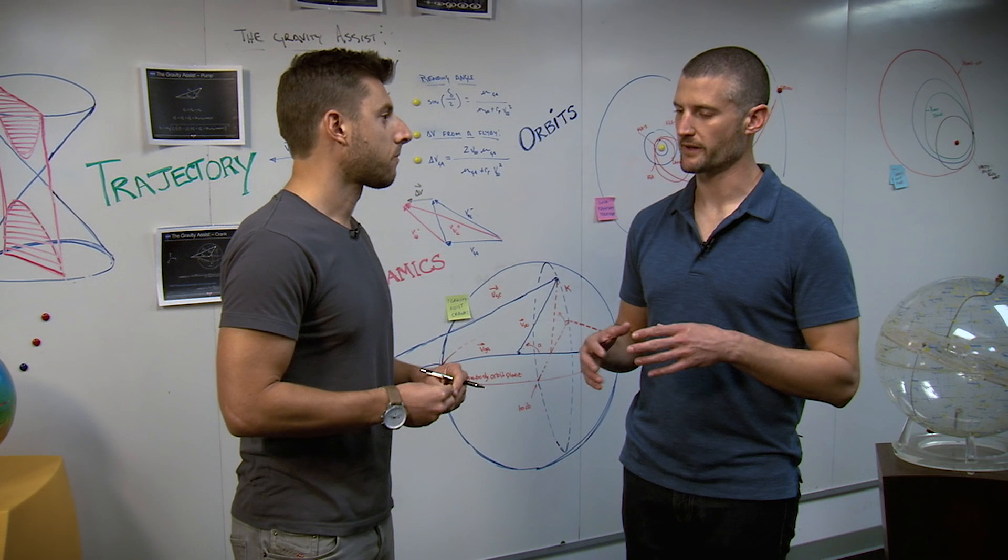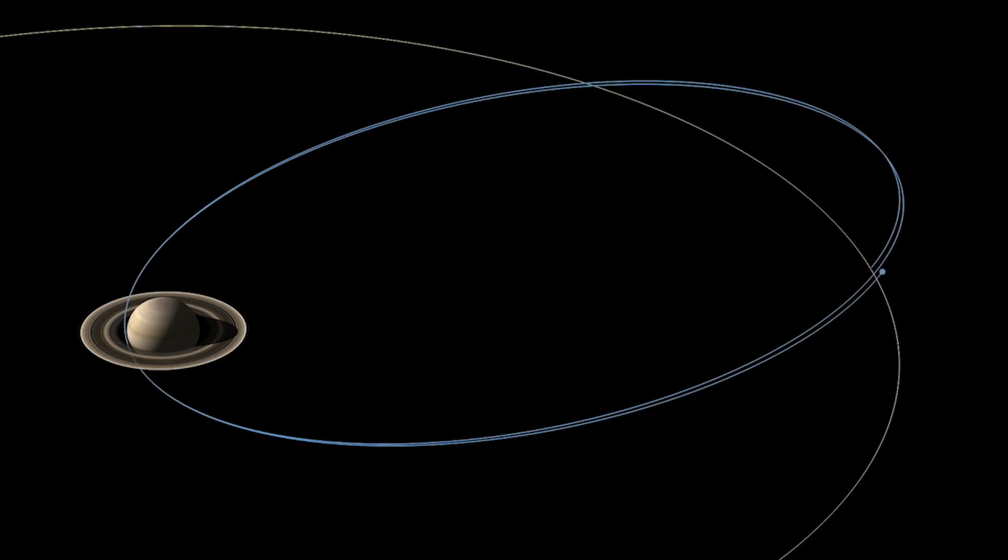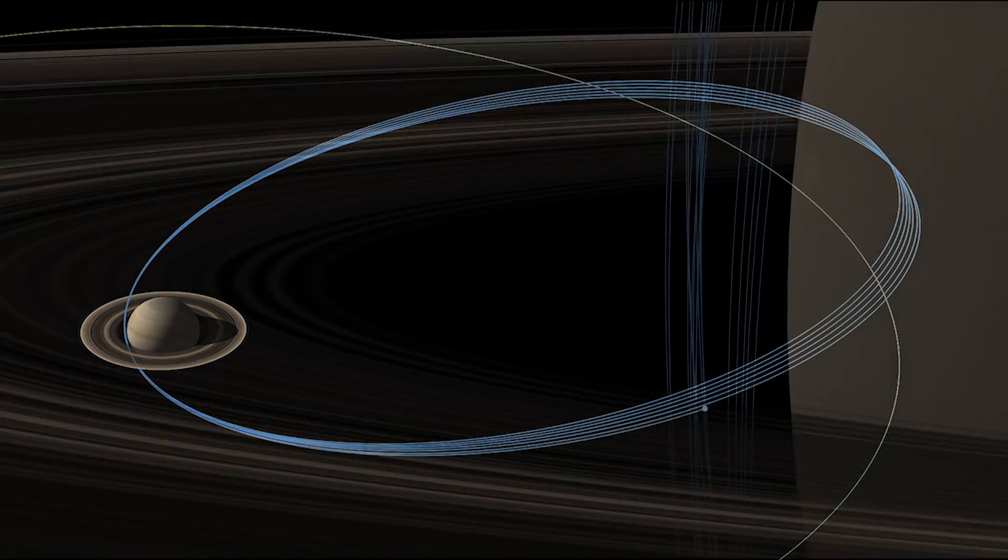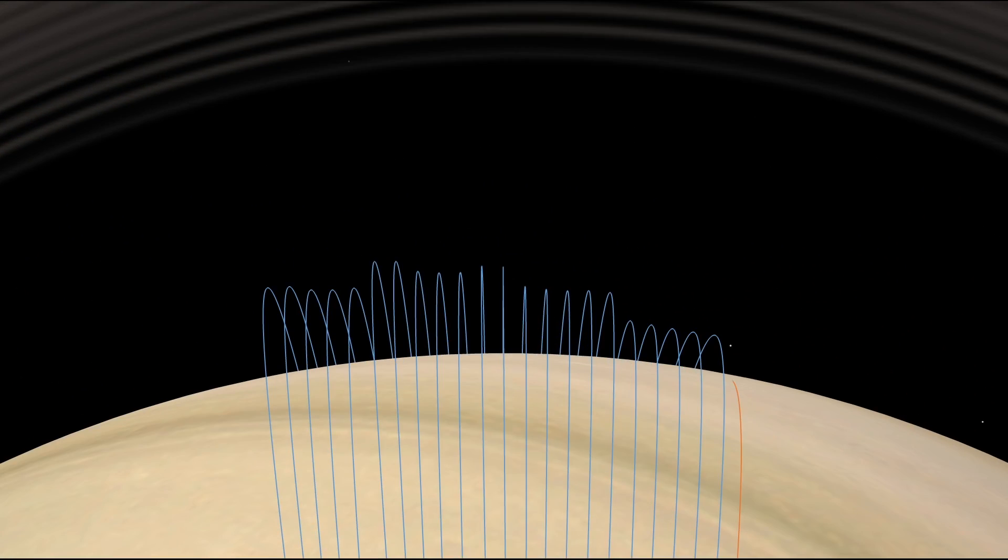Brent, what makes the grand finale particularly difficult and challenging? The grand finale is a series of 22 orbits where the periapsis, or the closest point of the orbit, is actually in this gap between the upper atmosphere of Saturn and the innermost part of the main rings.